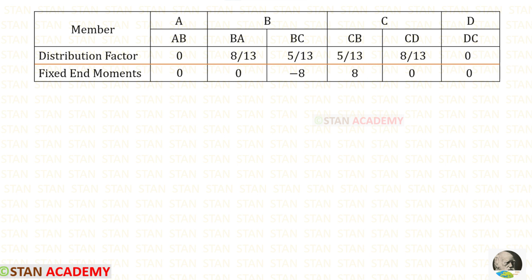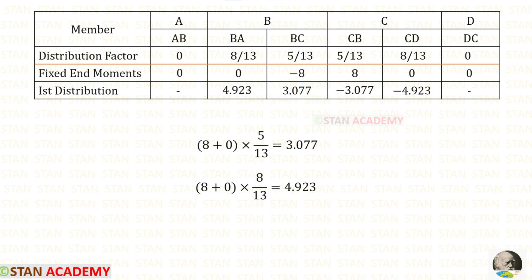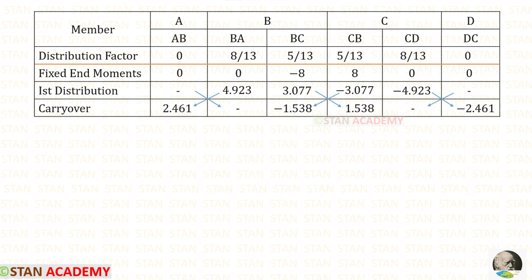Now let us start making the moment distribution table. First, enter all members, then the distribution factors, then the fixed end moments. For the first distribution at joint B, add the two fixed end moments and multiply by the distribution factors — the result is negative, so enter as positive. For the first distribution at joint C, add the two fixed end moments and multiply by the distribution factors — the result is positive, so enter as negative. Then do the carry over by dividing these values by 2 and entering the answers.